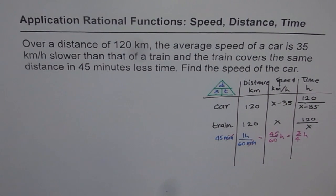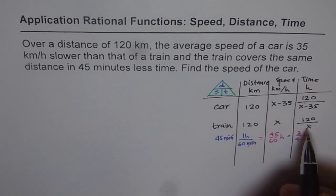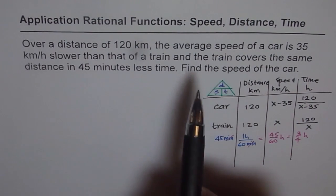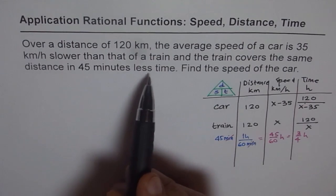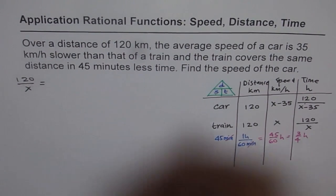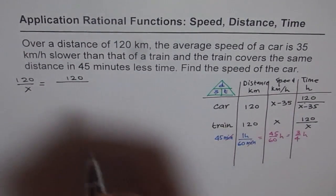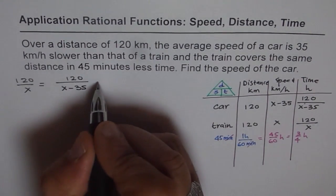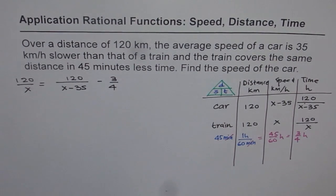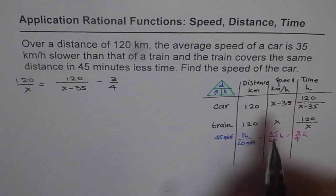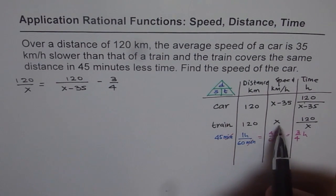That gives us our equation. The time taken by the train is 120 divided by x, and the time taken by the car is 120 divided by (x minus 35). The train takes 45 minutes — or 3 over 4 of an hour — less, so our equation is: 120/x = 120/(x − 35) − 3/4. Remember, x is the speed of the train, so the speed of the car will be x minus 35.